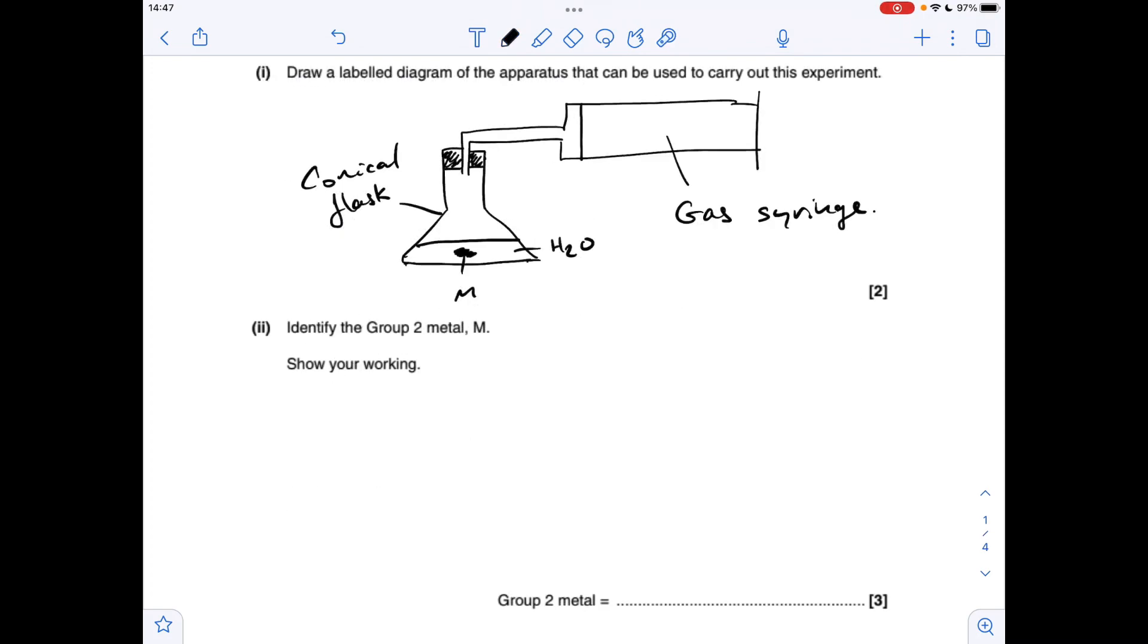Moving on to the calculation now. So we were told in the question that the experiment was carried out at RTP, room temperature and pressure. So the moles of hydrogen produced equals volume over the molar gas volume in centimeters cubed because that volume is in centimeters cubed. 4.04 times 10 to the minus three.